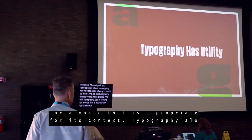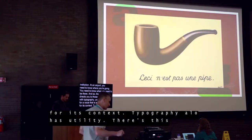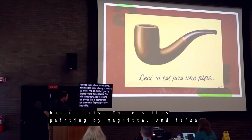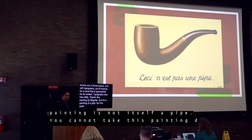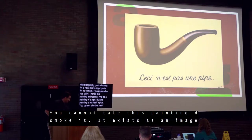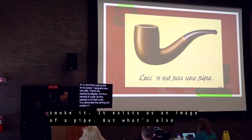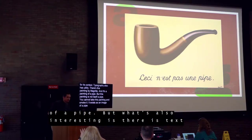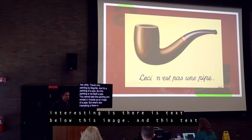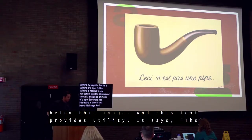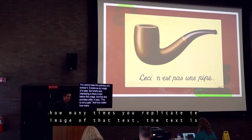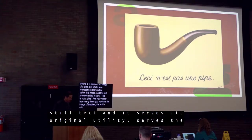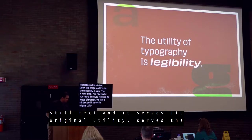Typography also has utility. There's this painting — it's a painting of a pipe, but this painting is not itself a pipe. You cannot take this painting and smoke it. It exists as an image of a pipe. But what's also interesting is there is text below this image, and this text provides utility. It says 'This is not a pipe.' No matter how many times you replicate this image, the text is still text and it serves its original utility. The utility of typography is legibility.